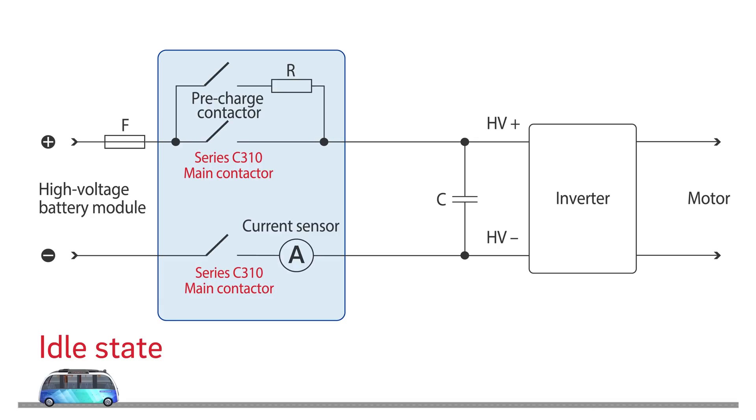In its idle state, the electric vehicle battery is disconnected from the high voltage electrical system. When the vehicle is switched on, the lower main contactor closes and then the pre-charge contactor. The capacitor is charged via the resistor. This limits the inrush current.